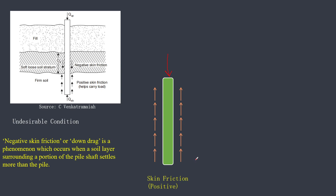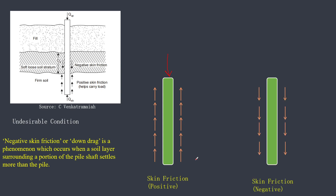Exactly opposite to that — if the skin friction acting on the soil is going vertically downward and it is sinking your pile, that kind of skin friction is called negative skin friction. The question is: how does negative skin friction occur in the pile?